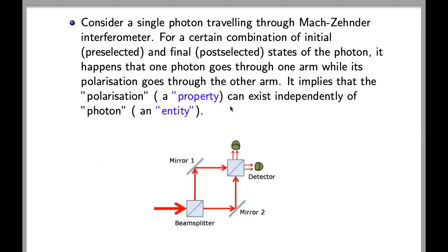Consider a single photon travelling through Mach-Zehnder interferometer. For a certain combination of initial pre-selected and final post-selected states of the photon, it happens that one photon goes through one arm while its polarization goes through the other arm. It implies that the polarization, a property, can exist independently of photon, an entity.